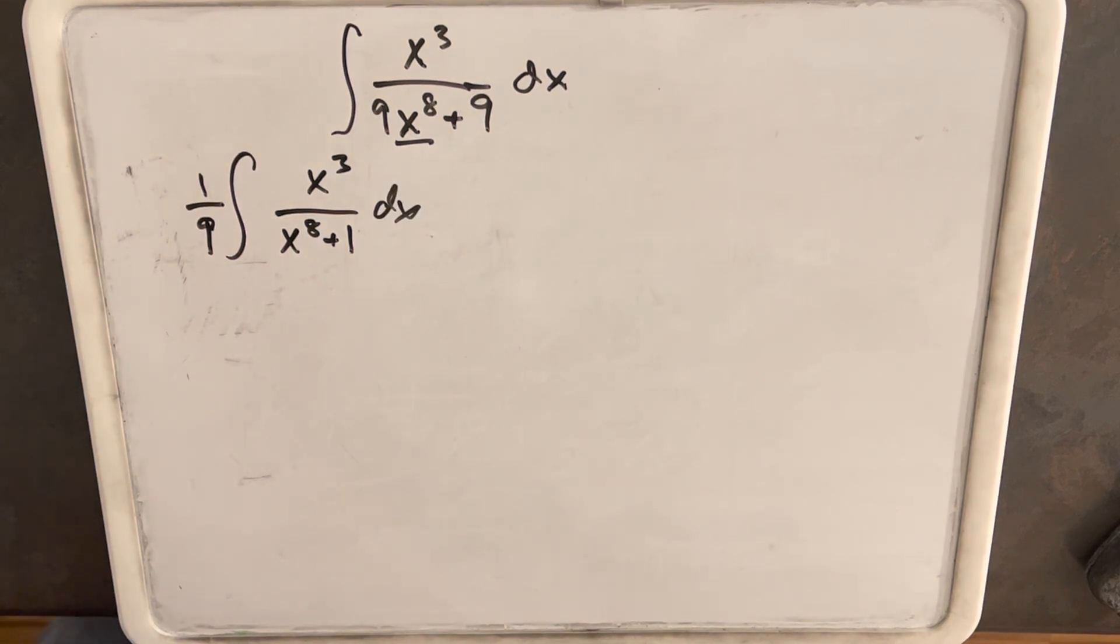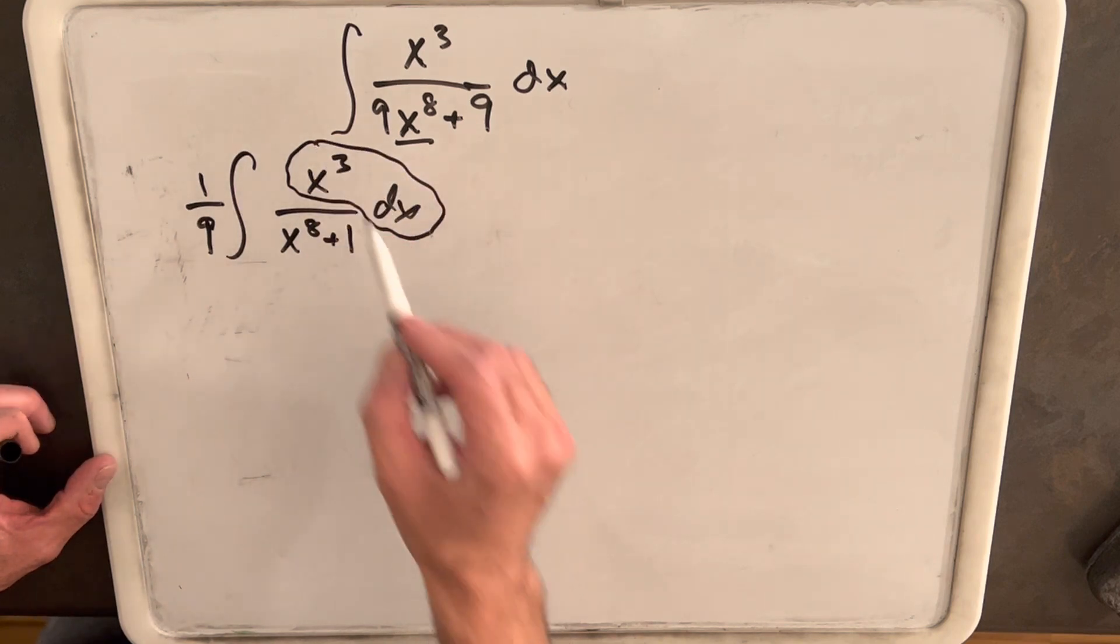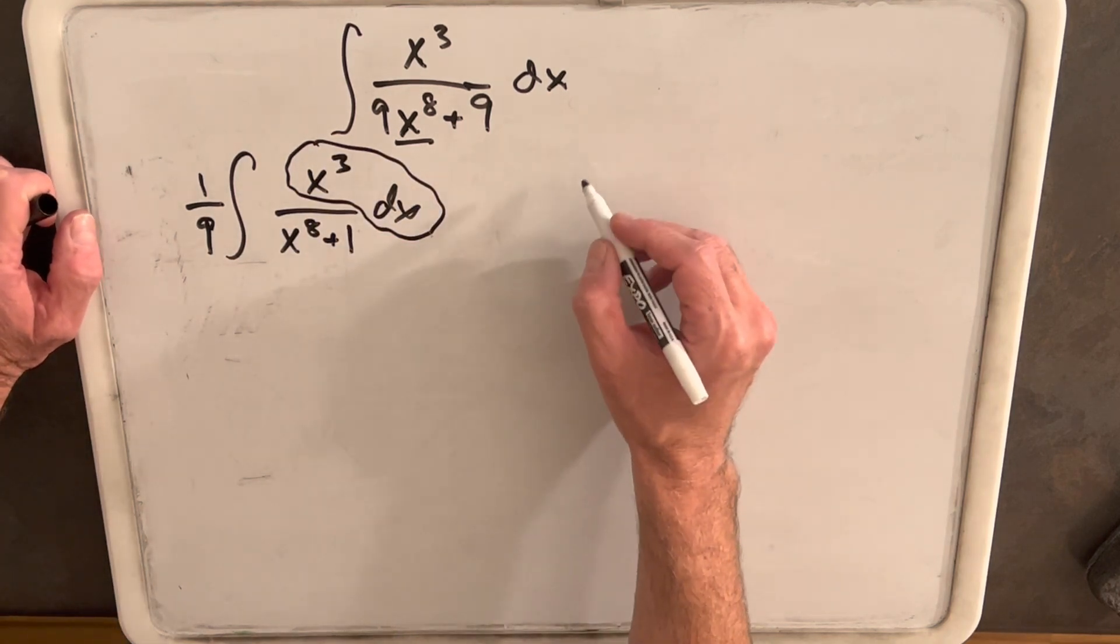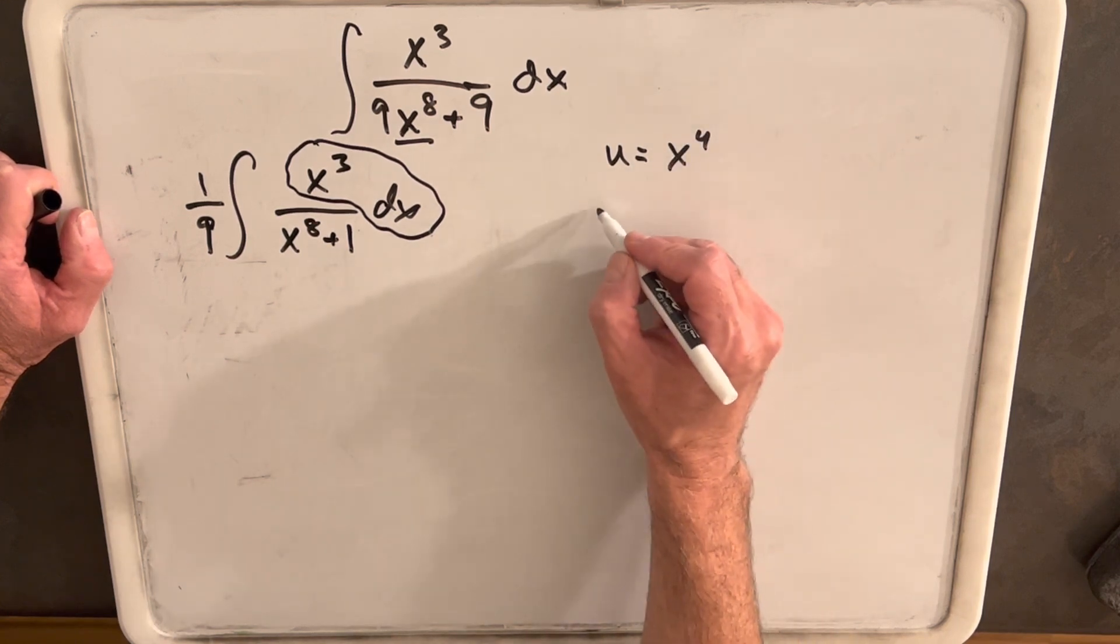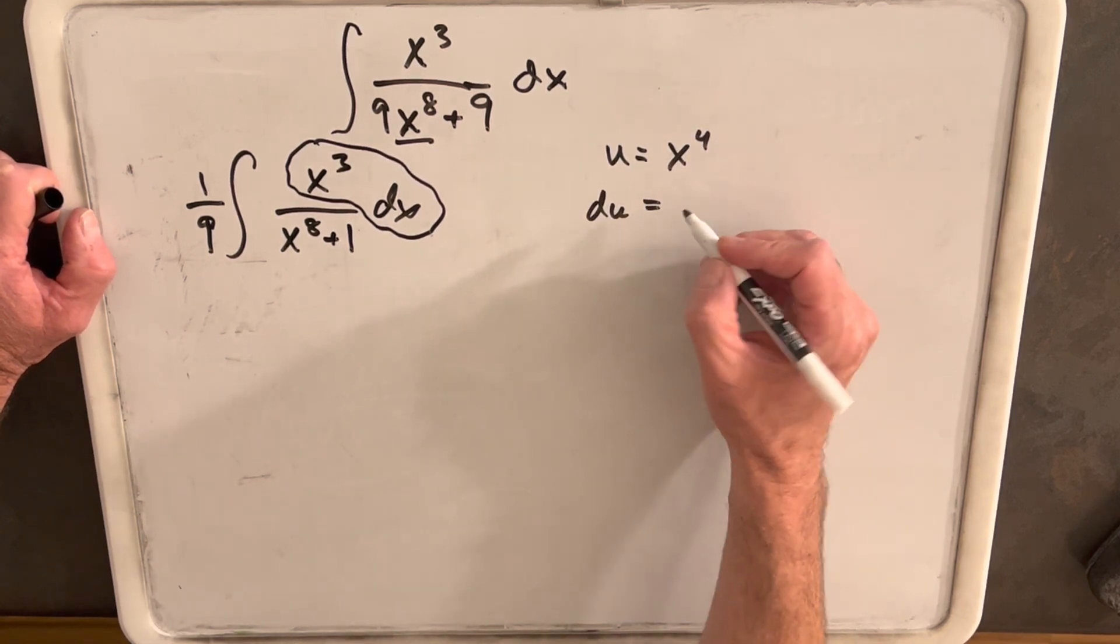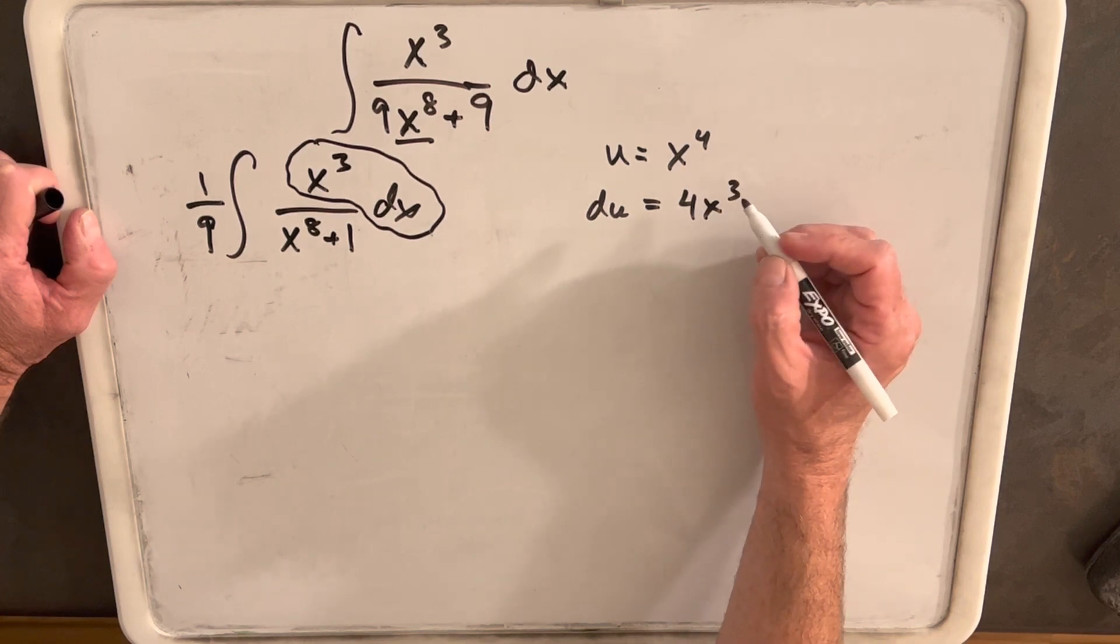So, we really want to use substitution. We'd really like du to be the numerator somehow. So, what we want to happen is if we could do u equals x to the fourth, then du would be four x cubed dx, and that would work.